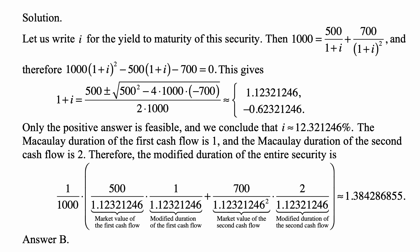Plus the present value of the second cash flow calculated at the yield we just calculated, times 2 over 1 plus the interest rate, which is the modified duration of the second cash flow.